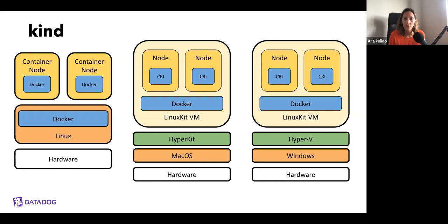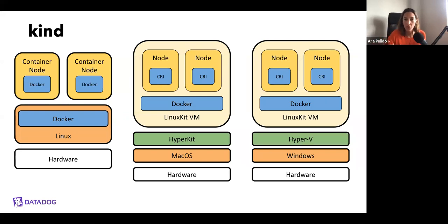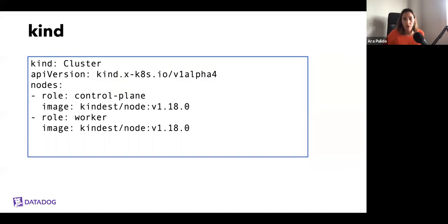Another benefit Kind has is that you can define all your configuration in YAML files instead of passing them on the command line — very good to keep in your Git repo to help with the CI aspect. In this example, we're defining a cluster with two nodes: one as control plane and one as worker, both running Kubernetes 1.18. In the demo, we run kind version, get the list of clusters, then run kind create cluster passing that configuration. It installs a CNI — kindnet, which is specific to Kind — and adds a storage class, and similar to Minikube, configures kubectl to point to the right context.